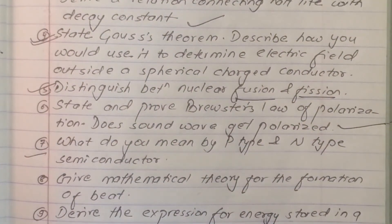Question number seven: What do you mean by P-type and N-type semiconductor?